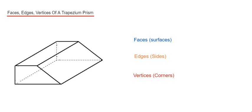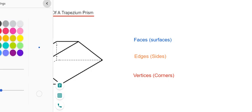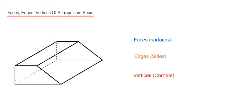So to begin with, let's do the faces. These are the same as the surfaces which make the trapezium prism. So we have one at the front, that's one. One at the back, that's two.